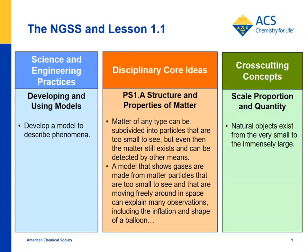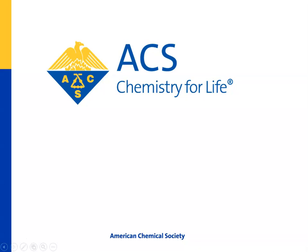For the disciplinary core ideas of structure and properties of matter, the lesson shows that matter can be subdivided into particles too small to see — whether it's a solid, liquid, or gas — and that gases are made up of particles that are far apart, move around in space, and can inflate something like a balloon. For cross-cutting concepts, natural objects exist from the very small to the immensely large; in this activity, we're looking at matter at the very small level of atoms and molecules. Thanks for watching and good luck with the lesson.